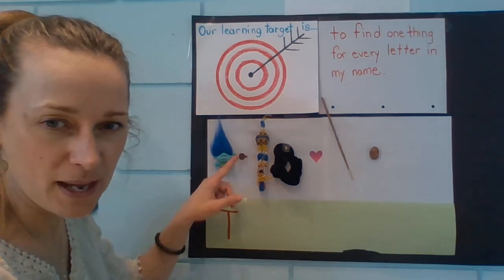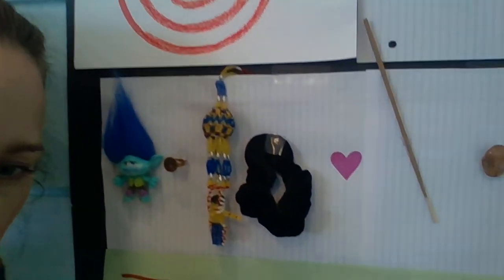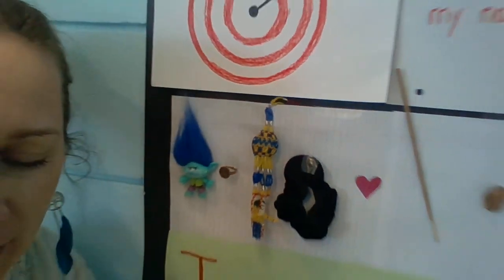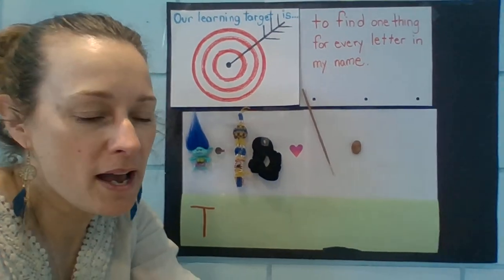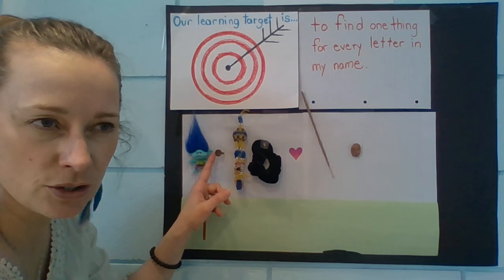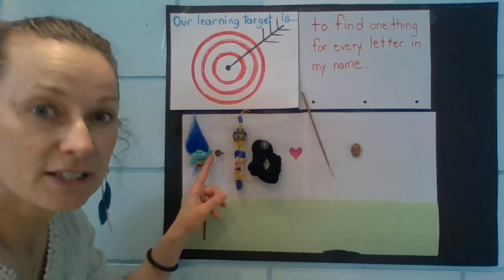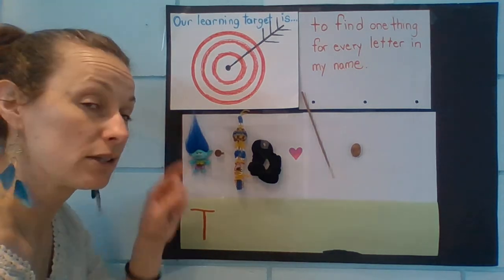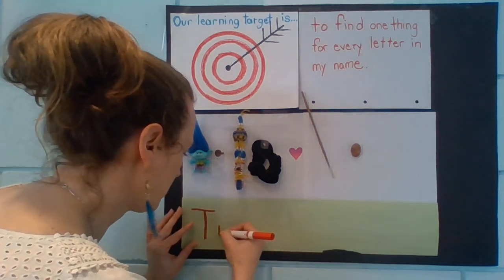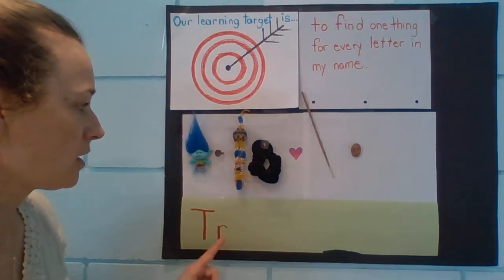The next thing I have on my paper — can you see it? If I come nice and close, it's a ring. So my next letter starts with that same sound. What letter is that? R. Good job. Lowercase r, not uppercase. T-R.